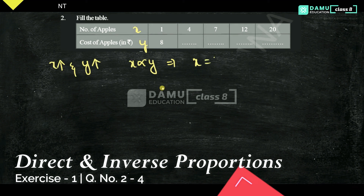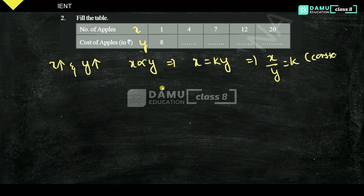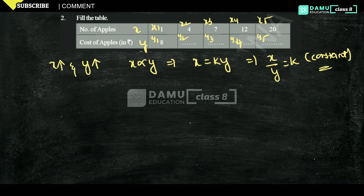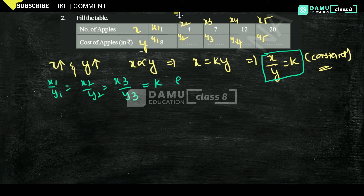To remove the proportional symbol, we write x equals k times y, so x by y will be equal to k. Here k is a constant — this value will be constant. For pairs x1 y1, x2 y2, x3 y3, x4 y4, x5 y5, we need to find the cost for the remaining values. The formula is x by y equals k, meaning x1/y1 = x2/y2 = x3/y3 = k, and so on for direct proportion.